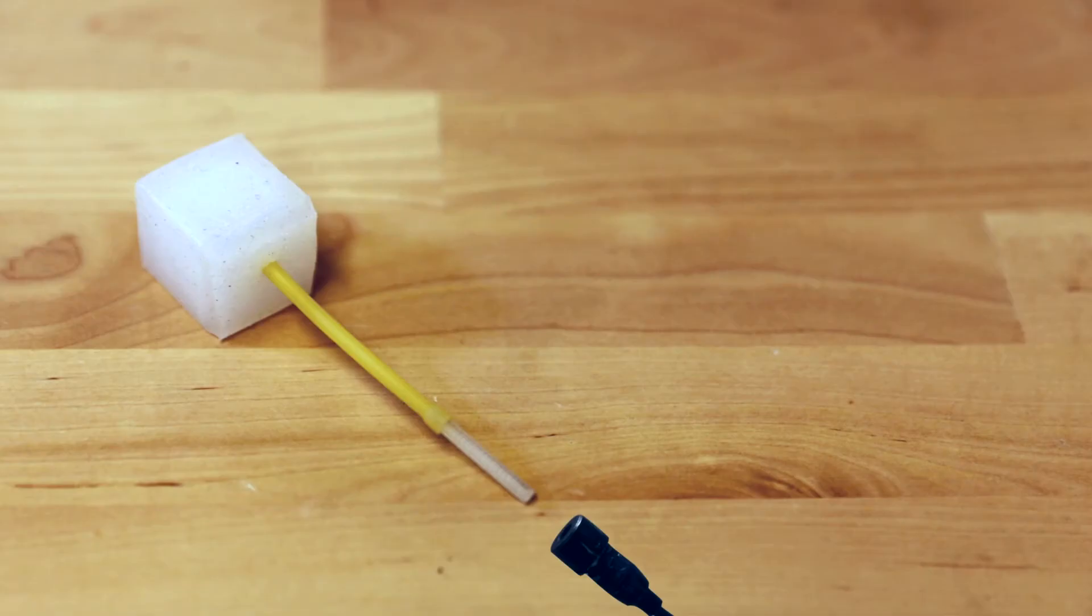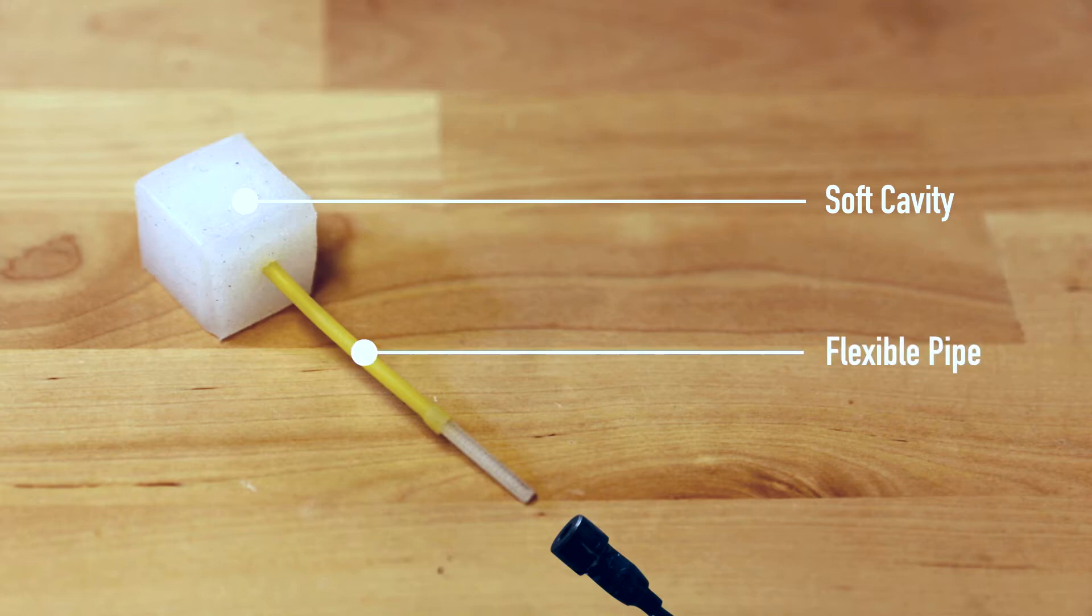Squeeze-a-Pulse is comprised of four parts: a soft cavity, a flexible rubber pipe, a uniquely designed corrugated tube, and a microphone.